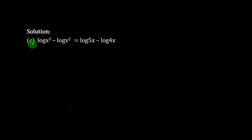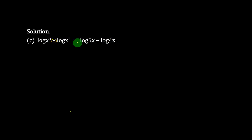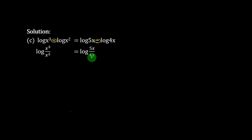Number c: log s power 3 minus log s power 2 equal to log 5s minus log 4. Log s power 3 minus log s power 2 equal to log 5s minus log 4.